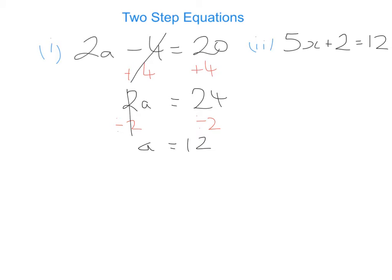Let's apply the same logic to example number 2: 5x plus 2 is equal to 12. We want to get rid of the 5 in front of the x and the plus 2. Step 1 is getting rid of the plus 2 — the opposite of adding 2 is minusing 2. On the left-hand side they give 0, so we're left with 5x. On the right-hand side, 12 minus 2 is 10. Then we get rid of the 5 by dividing both sides by 5, therefore x is equal to 10 divided by 5, which gives me 2.